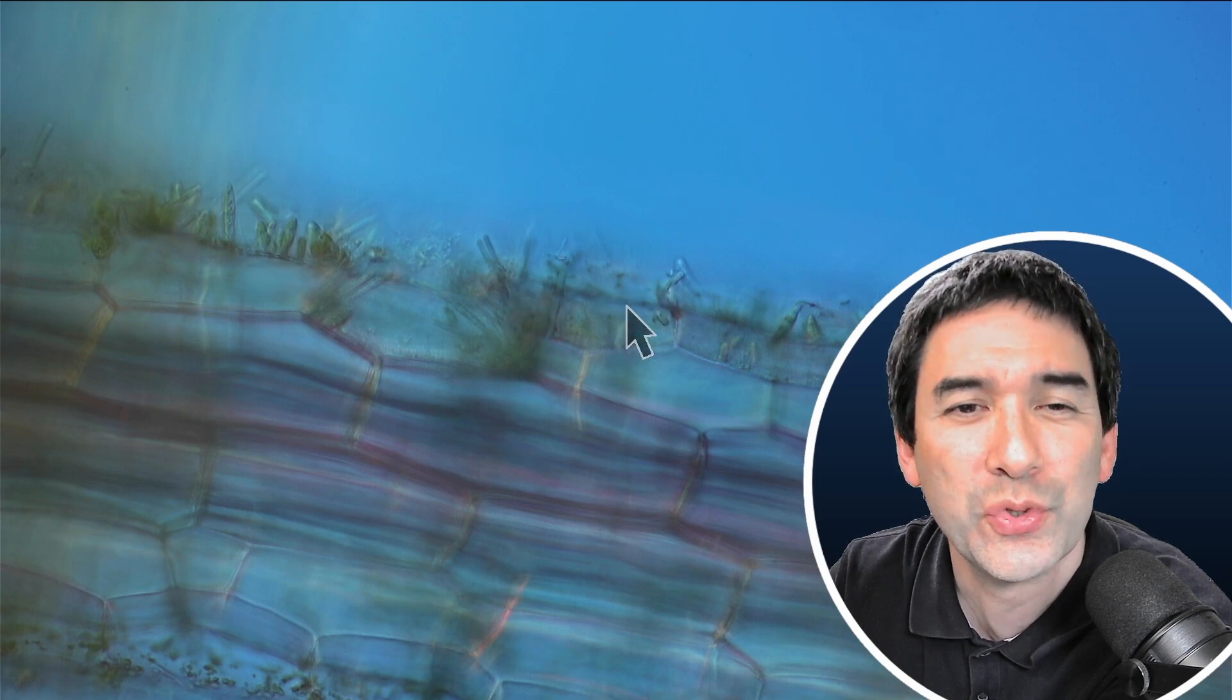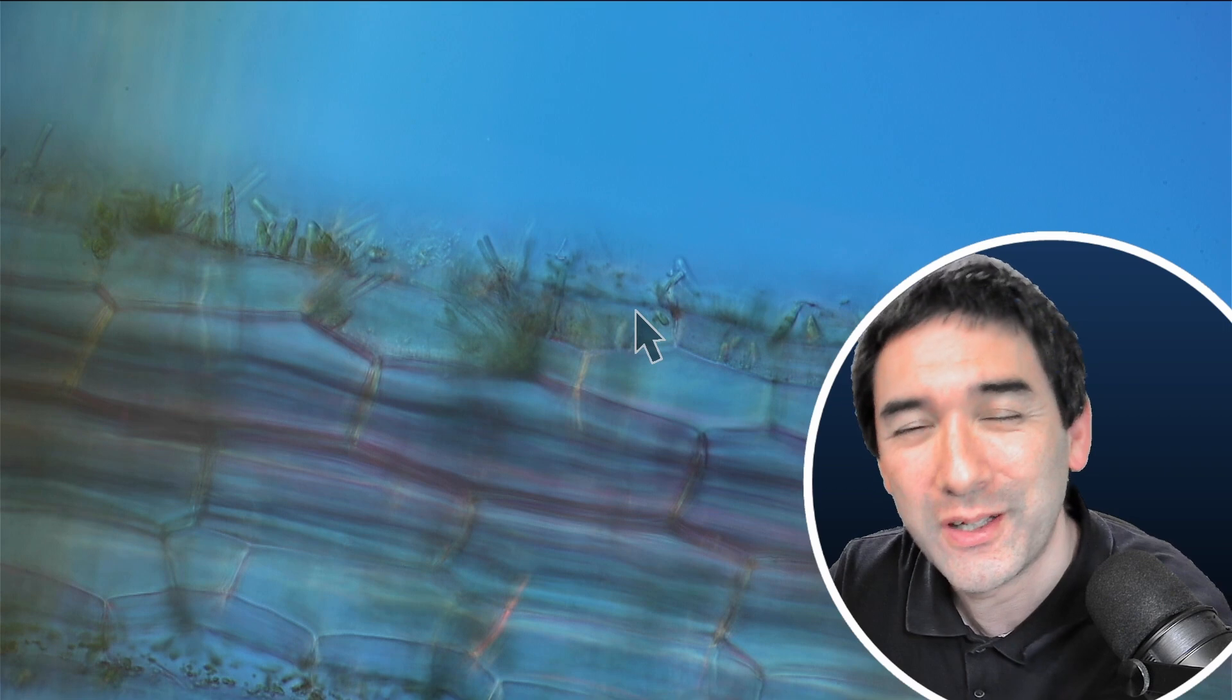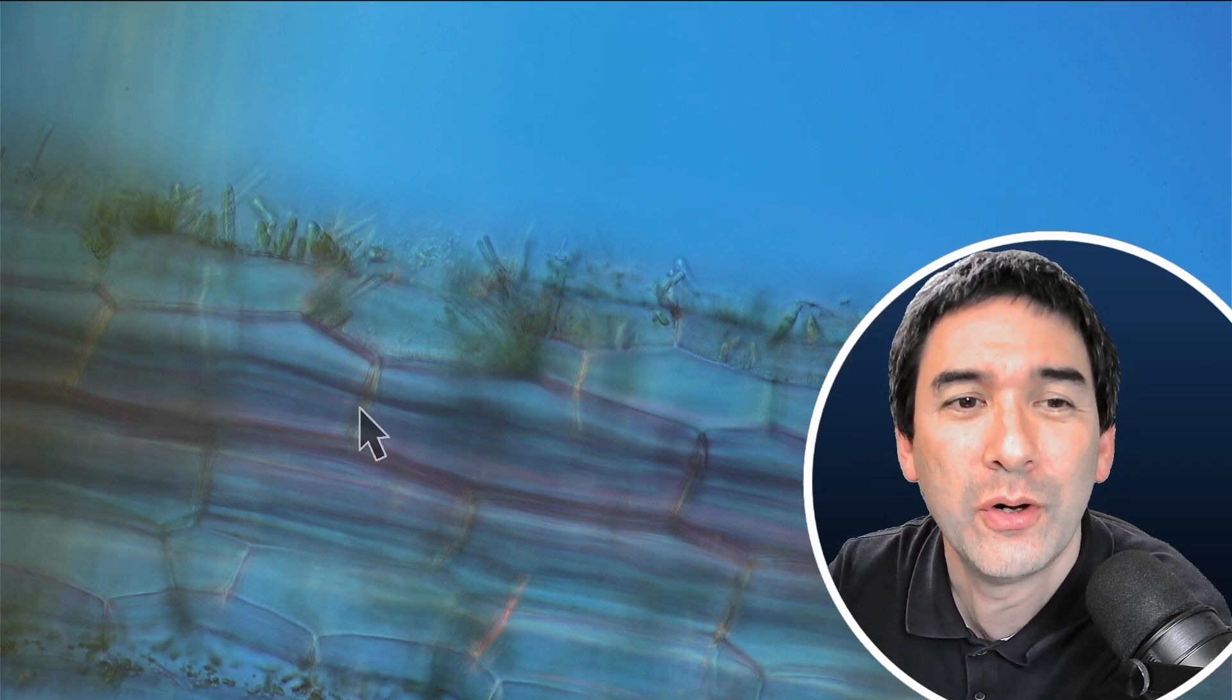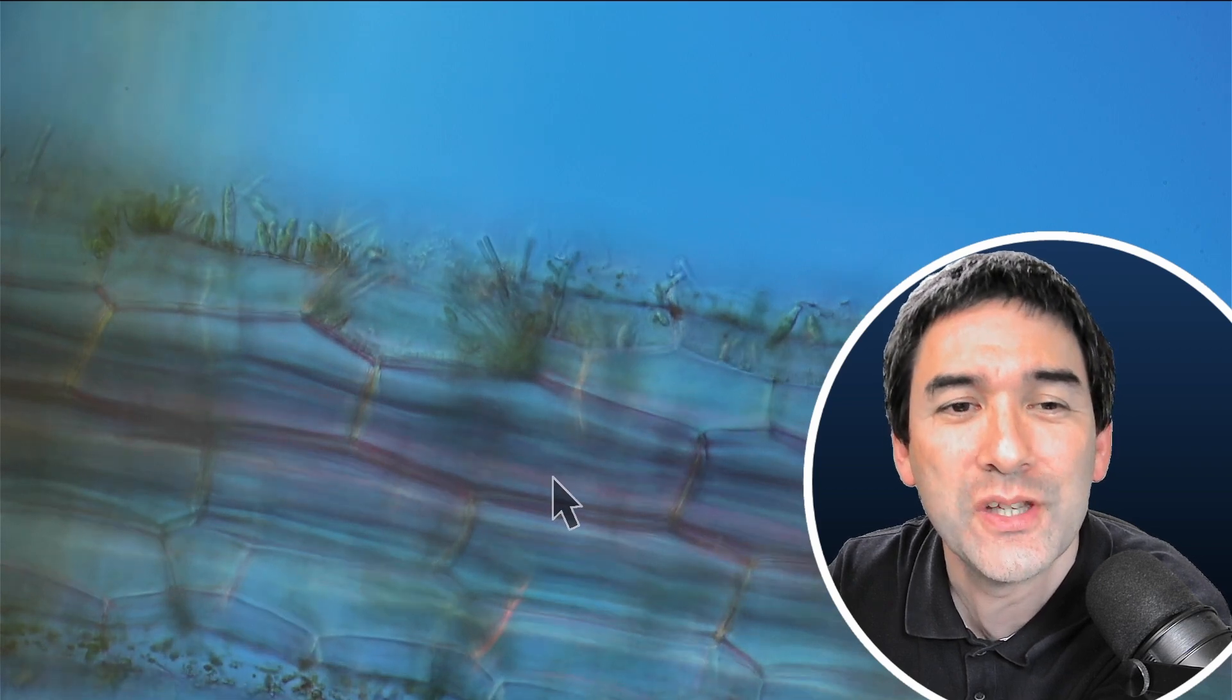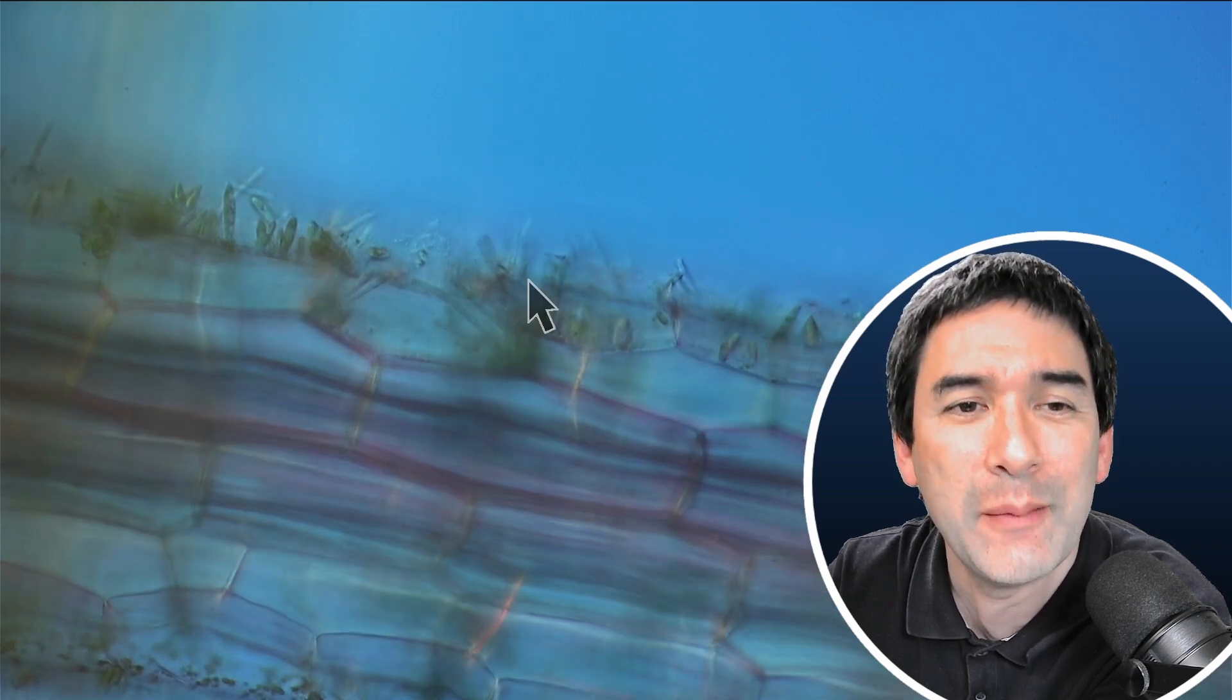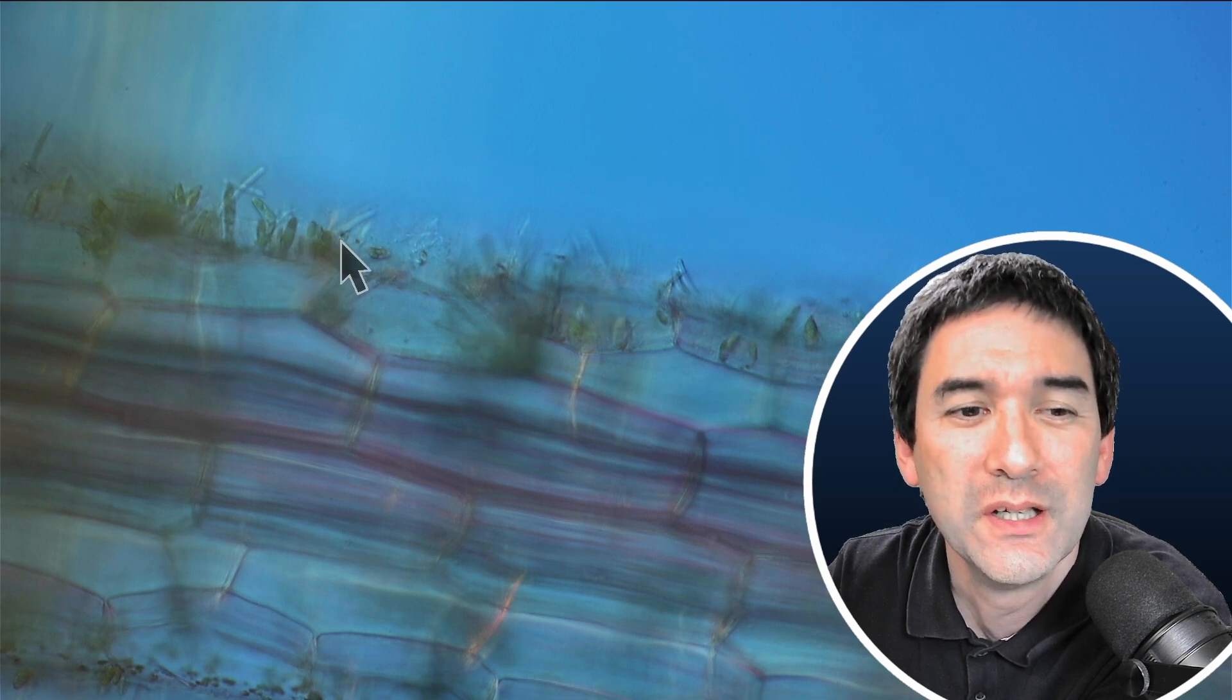This shows that on average—I know values differ—but on average the diameter of a eukaryotic cell like one of these algae is approximately 10 times the diameter of a prokaryote or bacterium. I just wanted to show this size comparison to you.